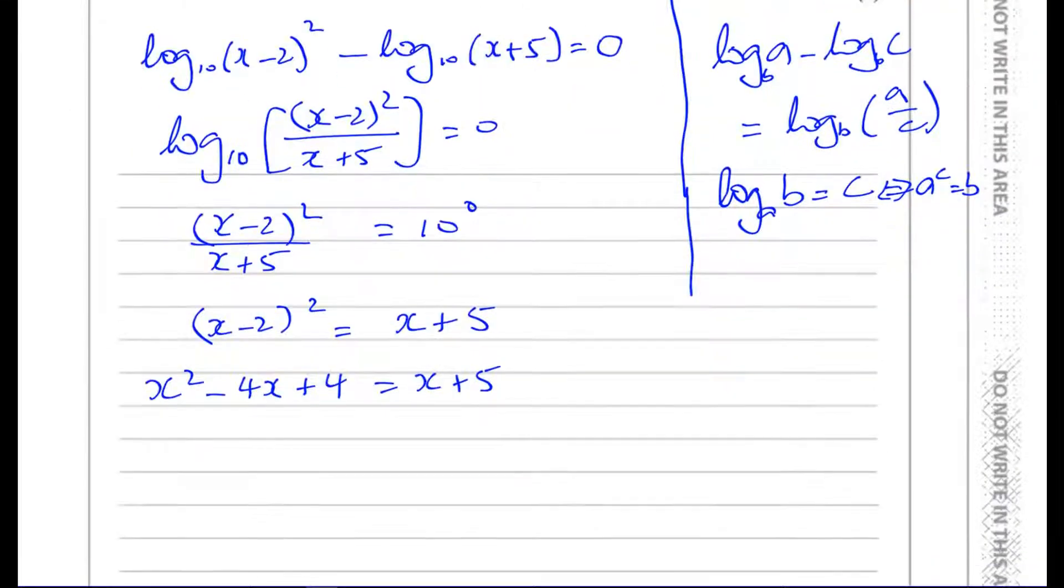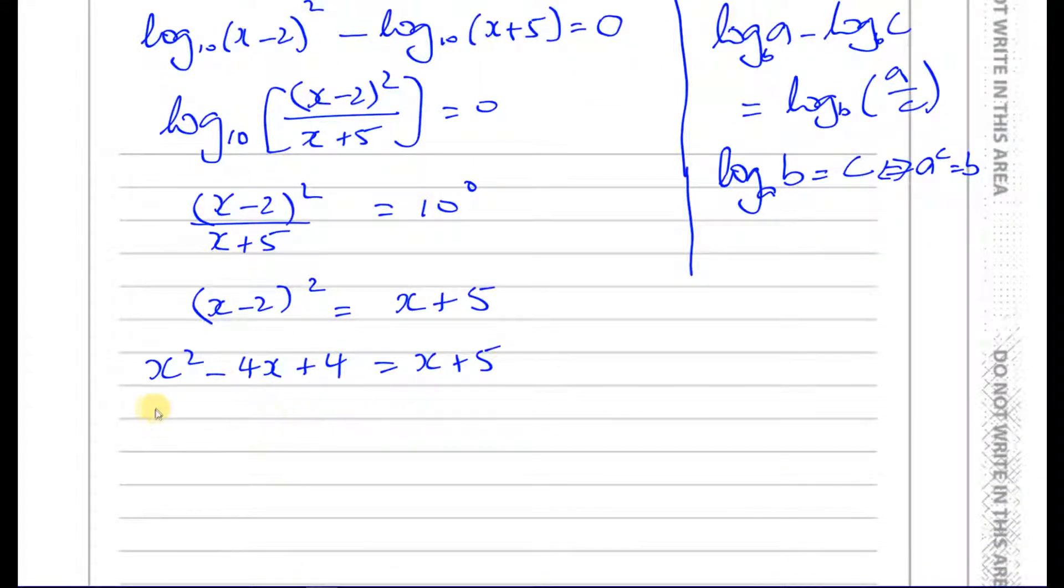We can, this is a quadratic, so we can bring everything to one side and make it equal 0. Use the 0 product property. So we're going to have x squared minus 5x, and it's going to be 4 minus 5, which is minus 1 equals 0.